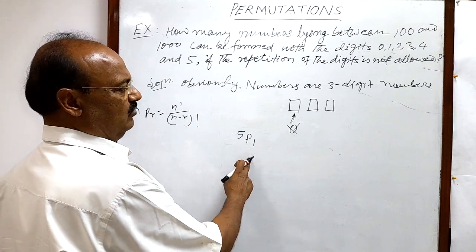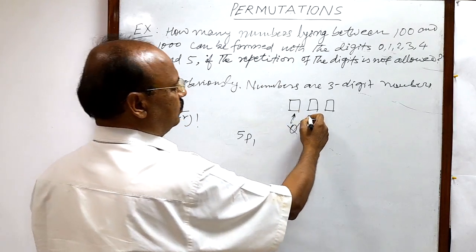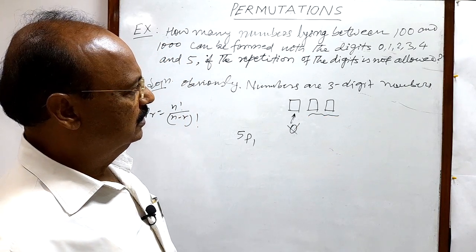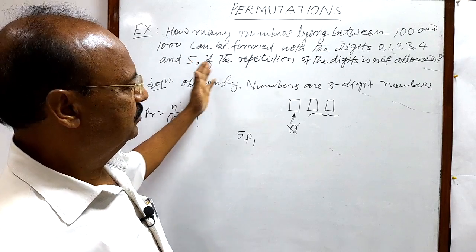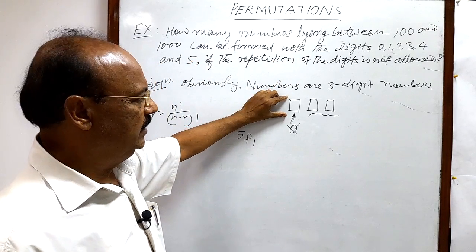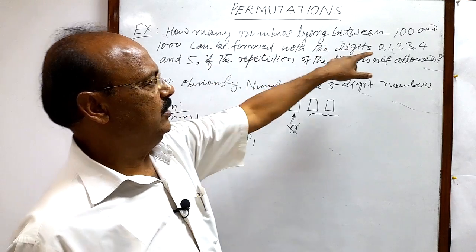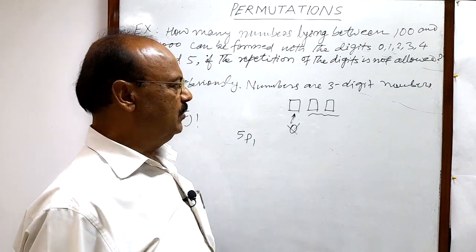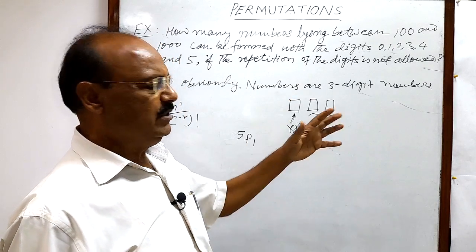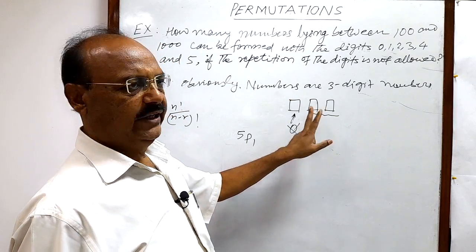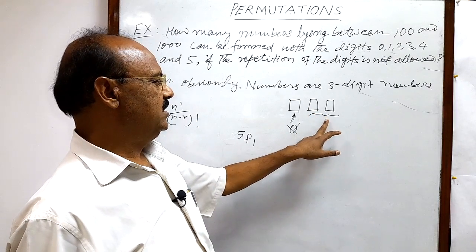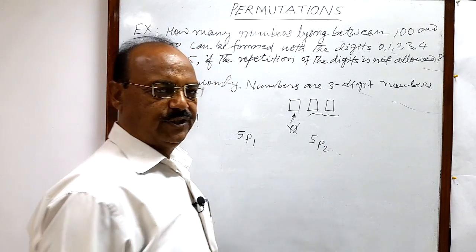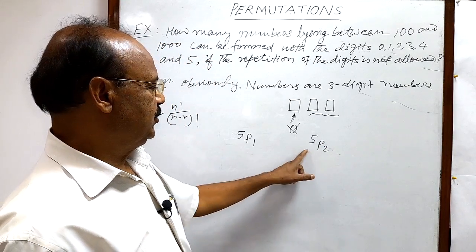The remaining two places — units and tens — can be filled with the remaining 5 digits, because one digit has already been selected for the hundreds place. Out of these 5 remaining digits, we have to select any 2 for these two places, which can be done in 5P2 ways. The answer is obtained by multiplying these two results.